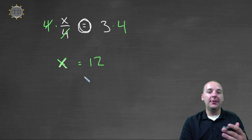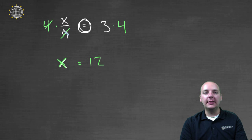We can go back and see if that's correct. x divided by four should have been three. Twelve divided by four is three. So this is in fact the right answer.